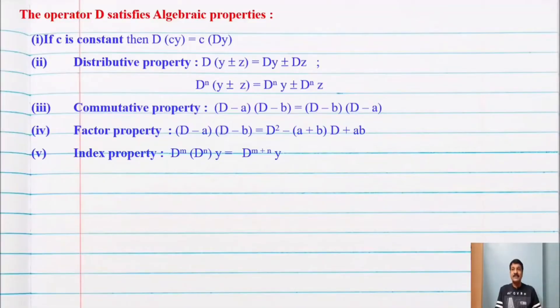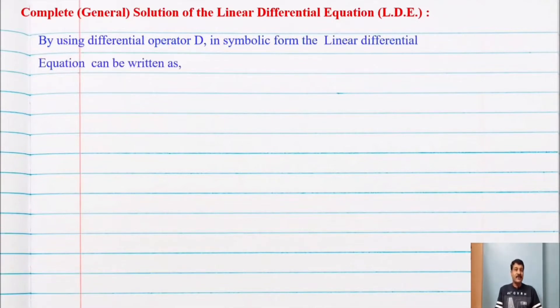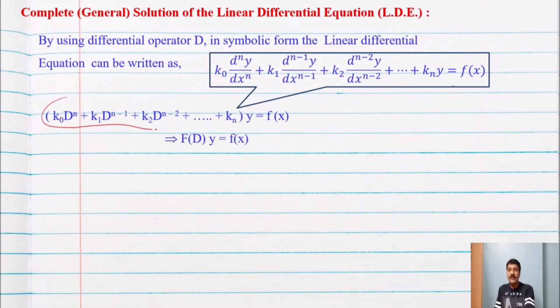Throughout this chapter we have to find the solution of the linear differential equation with constant coefficient. We will write this equation in symbolic form. By using differential operator D, we can write the linear differential equation in symbolic form as: (k0 D^n + k1 D^(n-1) + k2 D^(n-2) + ... + kn) operating on y equal to f of x. This entire coefficient of y is a function of D, so we write it as f(D) operating on y equal to f of x. Note that the right-hand side is a function of x only.